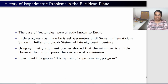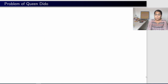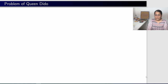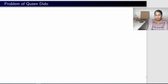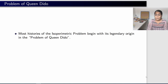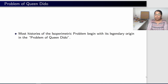I mentioned this history and the challenges faced by so many great mathematicians just to highlight how important the story of Dido is — to show you how challenging it is to prove something rigorously in mathematics, even though the observation and its implementation need not take that long. Most histories of the isoperimetric problem begin with its legendary origin in the problem of Dido.